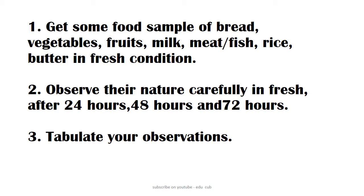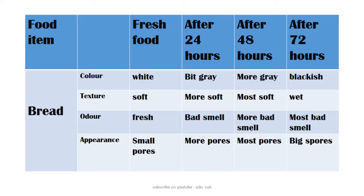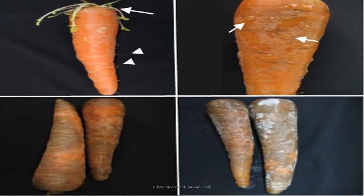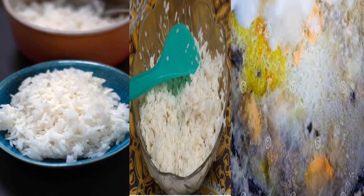Then tabulate your observations. Here I have done one for you — this is a sample of a bread slice from the first day to the fifth day. In the table, record the food item and features such as its nature when fresh, after 24 hours, 48 hours, and 72 hours. You can continue with other food items as well.